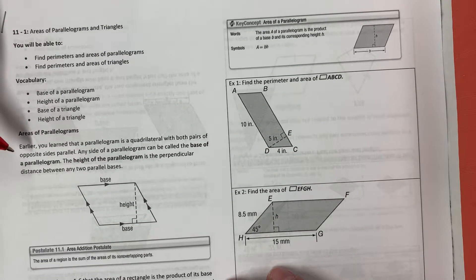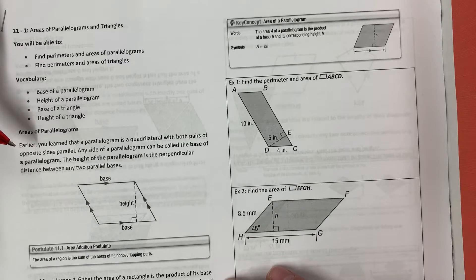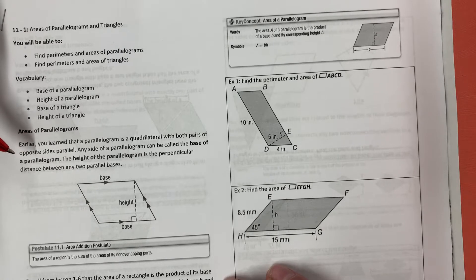Areas of parallelograms. Earlier you learned that a parallelogram is a quadrilateral with both pairs of opposite sides parallel. Any side of a parallelogram can be called the base of the parallelogram. The height of the parallelogram is the perpendicular distance between any two parallel bases.